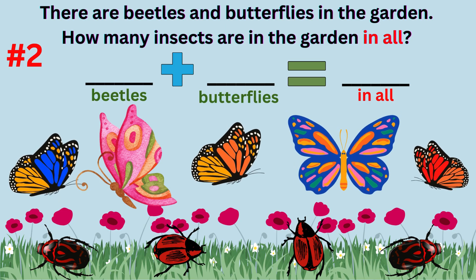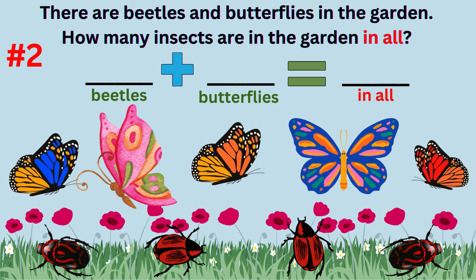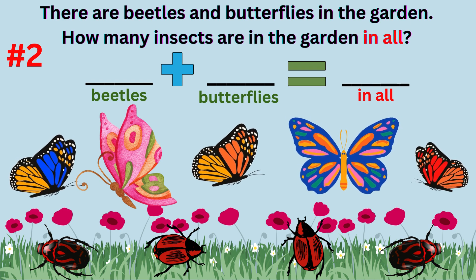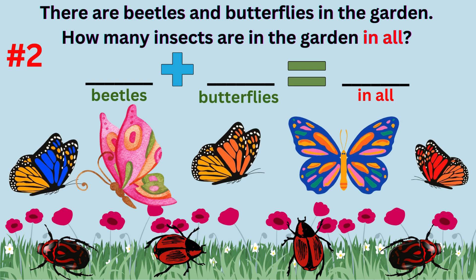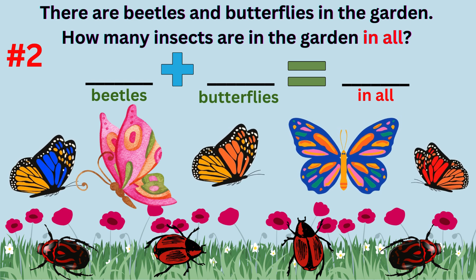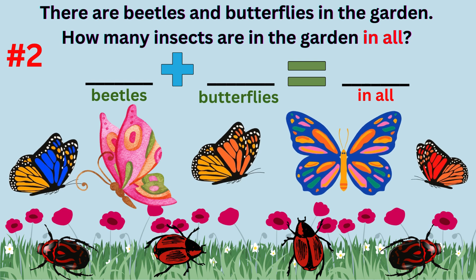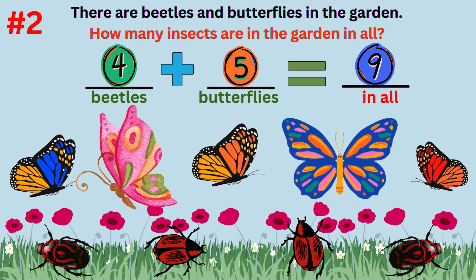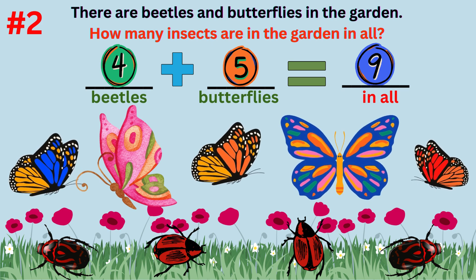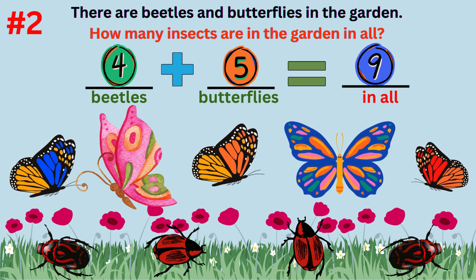Word problem number two. There are beetles and butterflies in the garden. How many insects in the garden in all? The answer to the question is there are nine insects in the garden in all. The addition sentence is four beetles plus five butterflies equals nine insects in all.